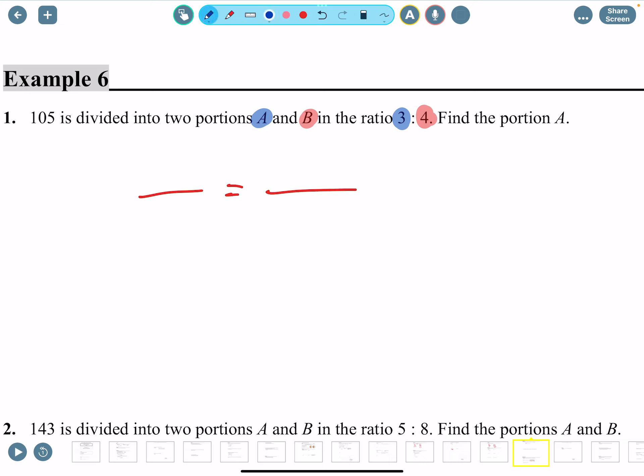So A here is going to be blue in color, which is three. The ratio is three. Now it says here 105. The number 105, 105 candies for example is divided to two portions A and B, so we want to find from the ratio three out of seven is going to be how many candies. So if you multiply three out of seven to 105, how many candies is that?